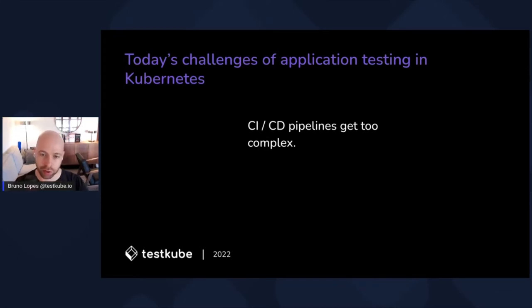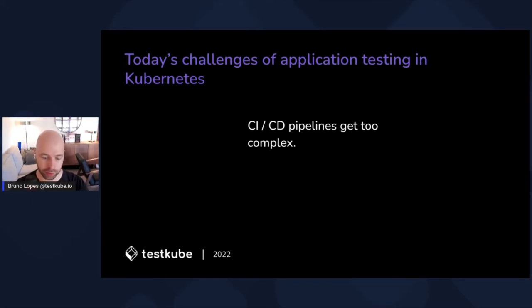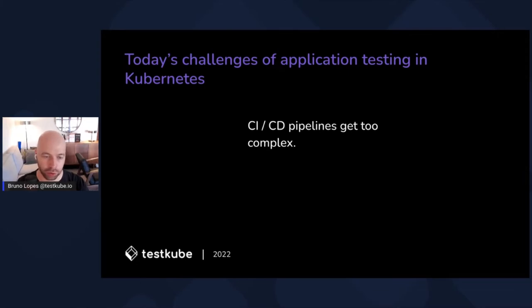The second issue is that pipelines always tend to get complex — and they'll get too complex if you don't constantly think about how to design them. As the business grows, there are more teams, more test use cases, and you'll find the need to change your pipelines and add more steps. So they'll get too complex, which can really get out of control.